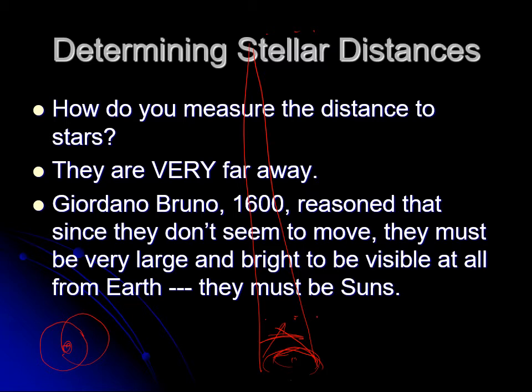Bruno reasoned that if the stars are that far away, they have to be pretty bright — nearly as bright as the sun. So the stars themselves must be suns. It's not exactly correct in every detail, but the basic idea is that the sun is a star. It appears so bright because we're so close to it, and the other objects we see in the sky are giant balls of glowing gas like the sun. They look dim because they are very far away.